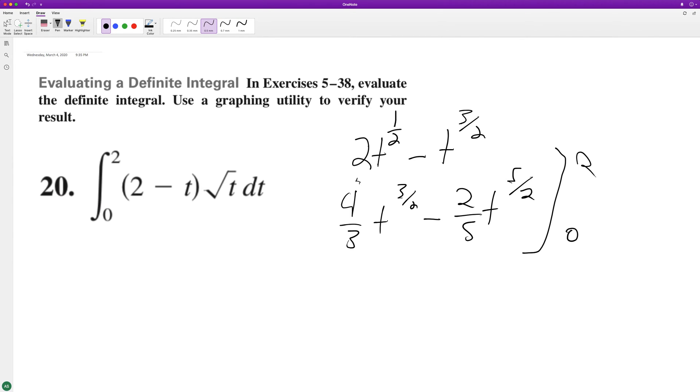So when we plug in 2 for the first part, we get 2 root 2 minus 2 fifths times 32 square root of 32 for root 2 minus 0 minus 0.